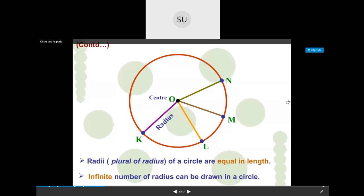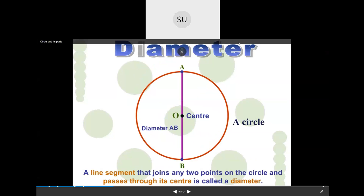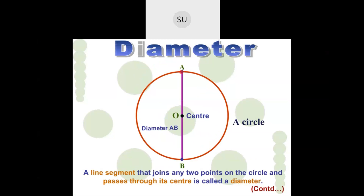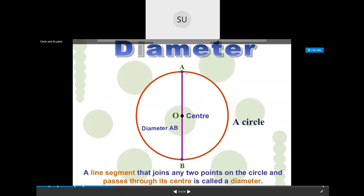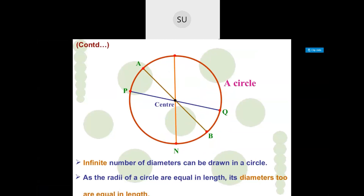A diameter is a line segment that joins any two points on the circle and passes through the center. For example, line segment AB joins points A and B on the circle and passes through the center. It is necessary that the line segment passes through the center to be called a diameter. A line joining two points on the circle but not passing through the center is not a diameter — it has a different term. There are infinite number of diameters in a circle.